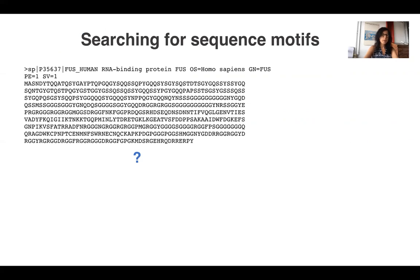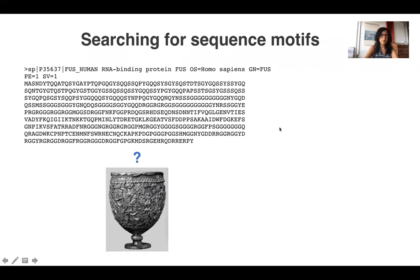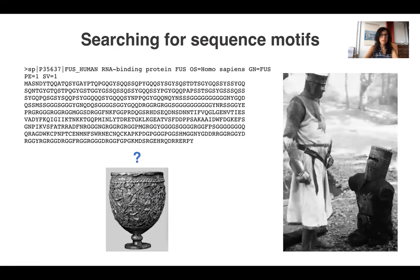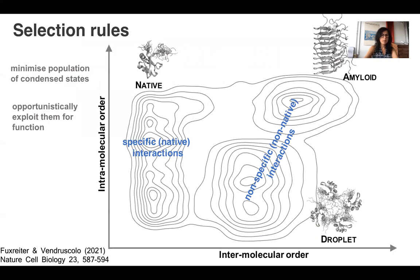The question is: what are the sequence codes for the droplet state? If you look for specific patterns of amino acid residues, which ones would account for the fact that most proteins should be able to sample the droplet state? In order to exploit functionalities in the native state, protein sequences should be evolved to minimize the population of the condensed states — in particular the amyloid state. But at the same time, since these states are unavoidable under cellular conditions, they should be opportunistically exploited for different kinds of functionalities.